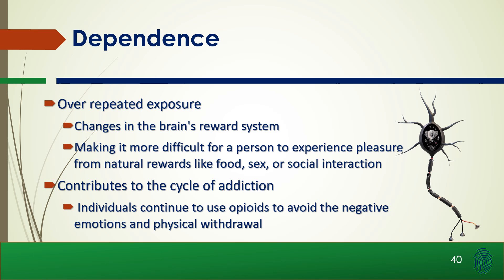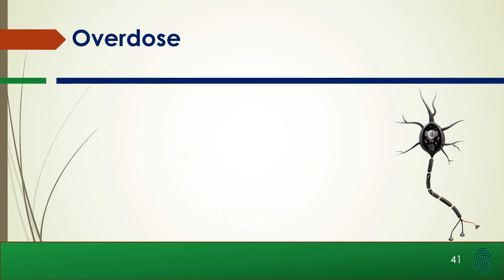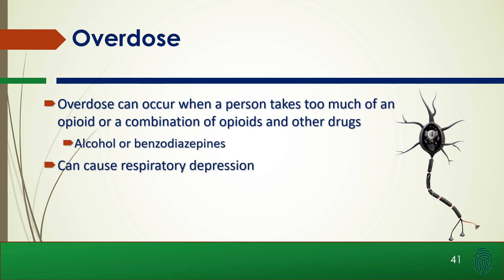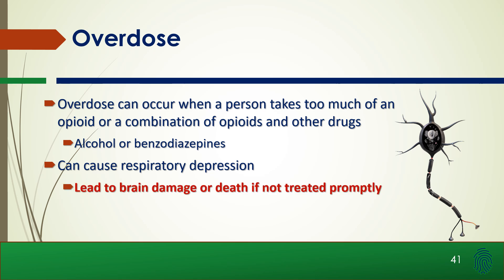Individuals continue to use opioids to avoid the negative emotions and physical withdrawal, which can lead to overdose. Overdose can occur when a person takes too much of an opioid or a combination of opioids and other drugs such as alcohol or benzodiazepines. This can lead to respiratory depression, which in turn leads to brain damage or death if not treated properly.